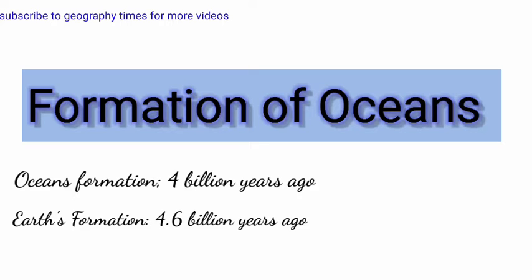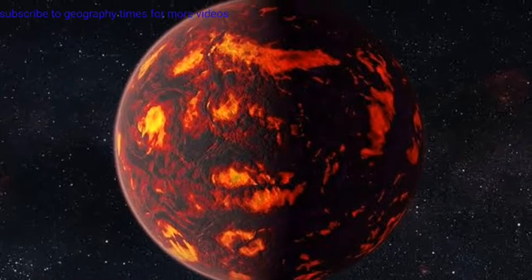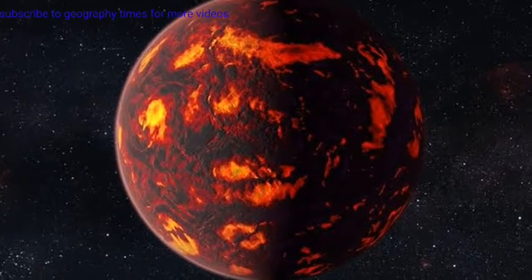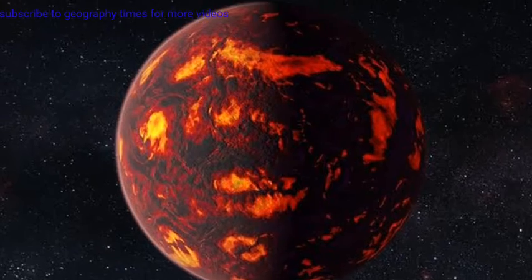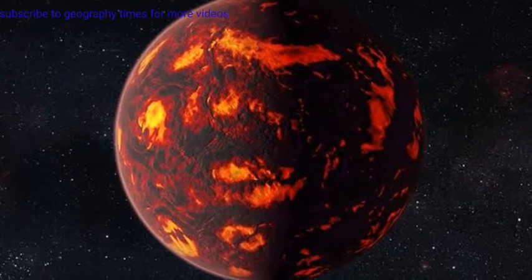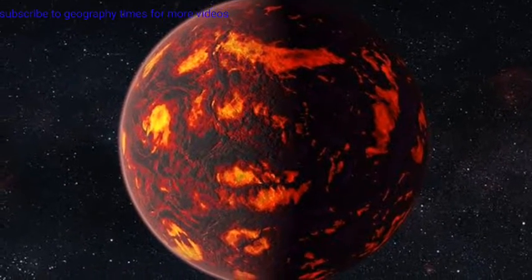When Earth was formed, it was a hot molten rock and there was no liquid water on Earth, but the ingredients required for the formation of water were there. When volcanic eruptions took place, one of the gases that came out of Earth's crust was steam.